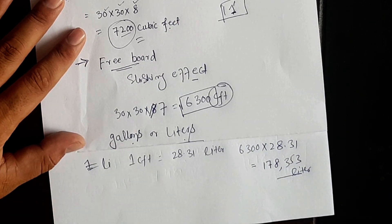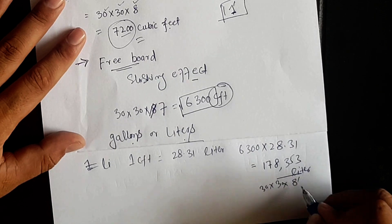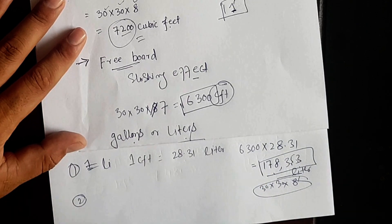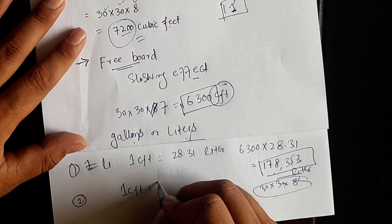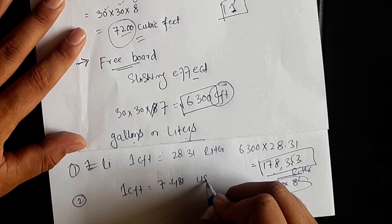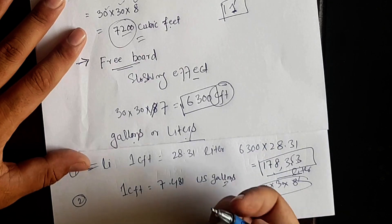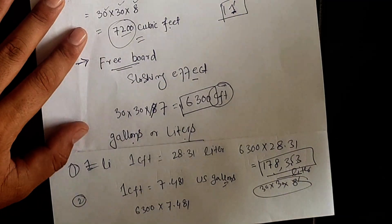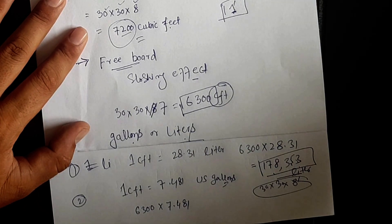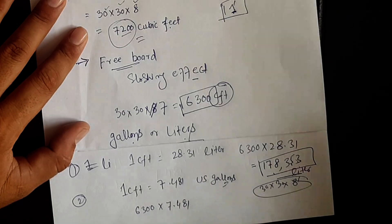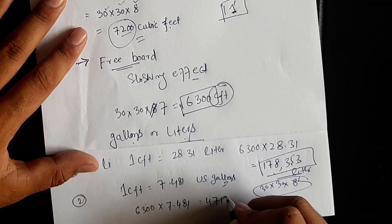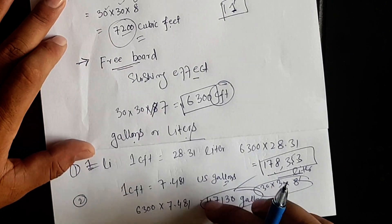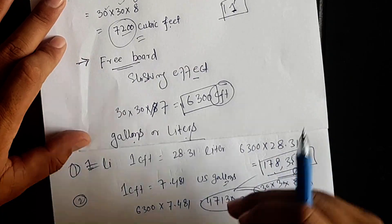For a water tank of 30 × 30 × 8 feet, the actual water capacity is 178,353 liters. For gallons, we use US gallons: 1 cubic foot equals 7.481 US gallons, so 6300 × 7.481 equals 47,130 US gallons. This will be the actual water capacity stored in this water tank.